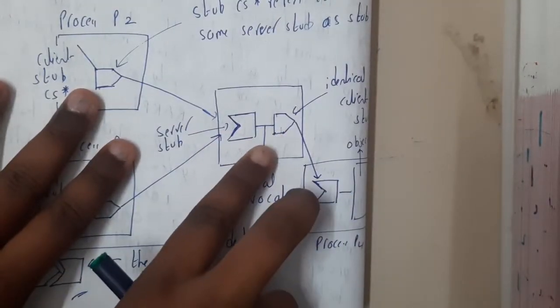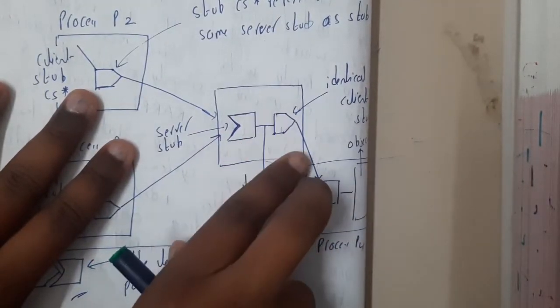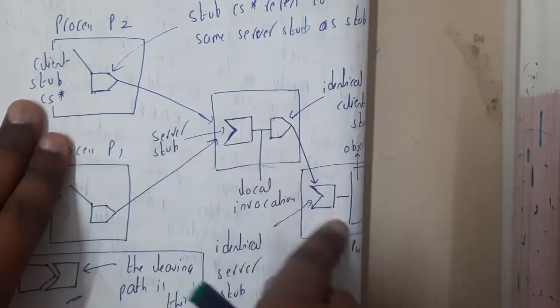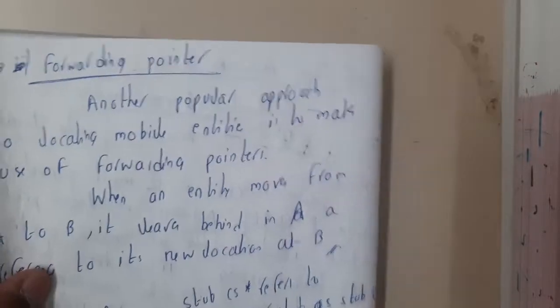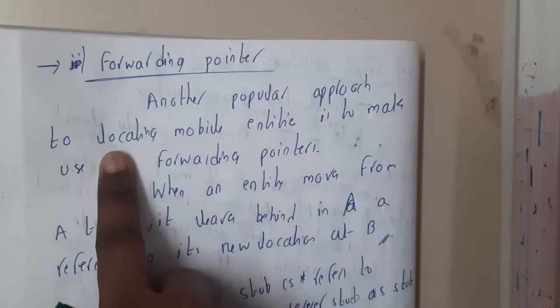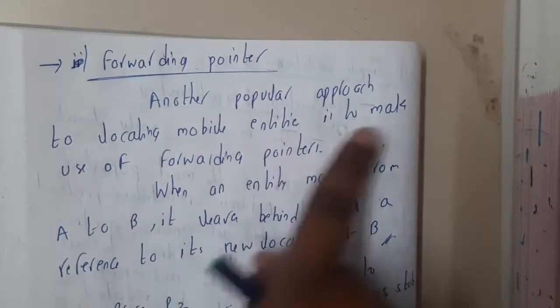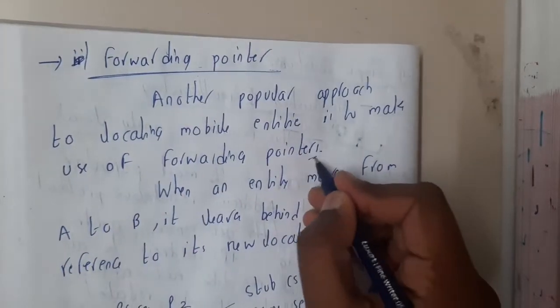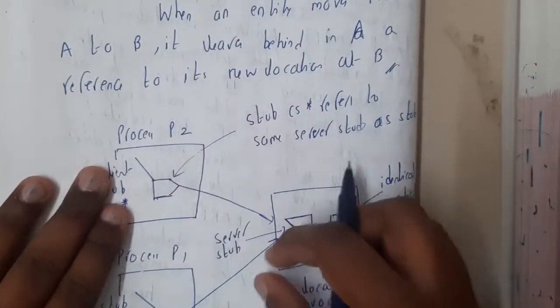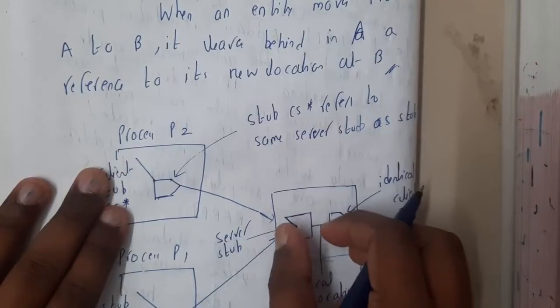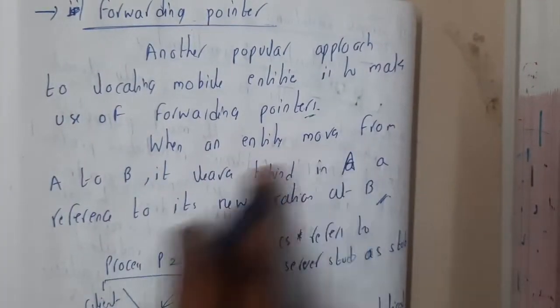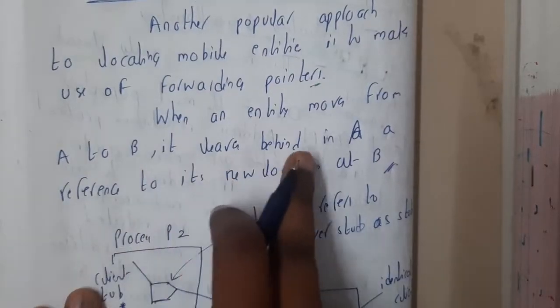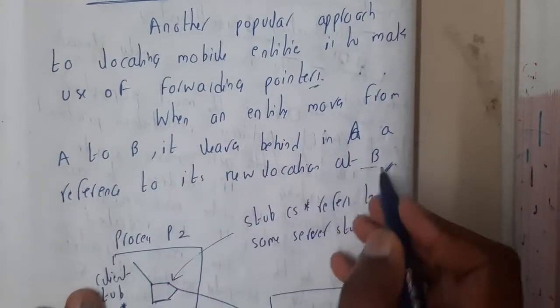Similarly, if you observe here, this part and this part will fit among themselves, so this message will also pass here, and at the end the transfer will be successful. That is the concept here. Another popular approach to locating mobile entities is to make use of forwarding pointers. Basically, this pointer is forwarded forward, and once it forms a lock, the message will be forwarded. When an entity moves from A to B, it leaves behind a reference to the new location B.